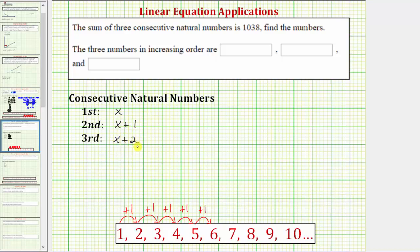And now because we know the sum of the three consecutive natural numbers is 1,038, we can write an equation, solve for x, and determine the three consecutive natural numbers. The equation would be x plus x plus one, plus x plus two, equals 1,038.